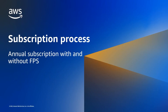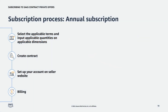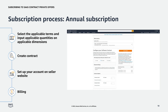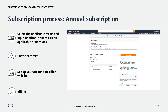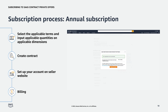Now let's take a look at how to subscribe to a SaaS Contract Private Offer. As a reminder, these are private offers where the buyer makes an upfront purchase and does not use FPS. First, the customer will sign in to the AWS account they want to use to subscribe to the private offer. Next, they'll navigate to the private offer. Then they'll select the applicable term in the Contract Duration section. From here, the customer will enter their specified quantity for the applicable dimension in the Contract Options section. They'll review the pricing to ensure it aligns with their buying needs, and finally they'll choose Create Contract. A confirmation page will open indicating a successful subscription, and the customer will be prompted to set up their account.